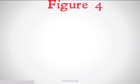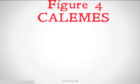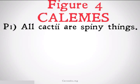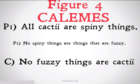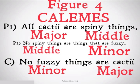An example of a famously valid figure 4 is the Camestres argument — that's going to be A-E-E. An example might be: all cacti are spiny things; no spiny things are things that are fuzzy; therefore no fuzzy things are cacti. We know this is figure 4 because spiny things, our middle term, is set on that diagonal going from the bottom left to the top right.